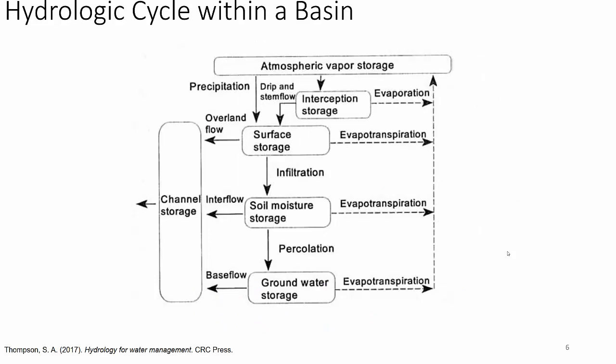As we evaluate within a contained area the movement of water, we see the atmospheric vapor storage drops to the surface through precipitation. It's sometimes intercepted through tree branches and leaves, and you have drip and stem flow down to the surface. Some of that water is evaporated directly back up. Surface water is then either stored or infiltrated. Water that exceeds storage capacity becomes overland flow. Infiltration goes into soil moisture where it can be evapotranspired through plants or percolate down to groundwater. Interflow is the subsurface flow that is not quite groundwater, flowing to channel storage and base flow — groundwater that often flows to channels, reservoirs, or the ocean.